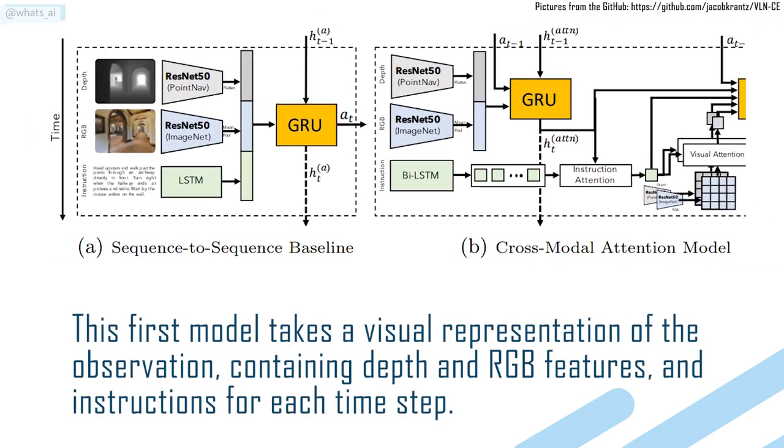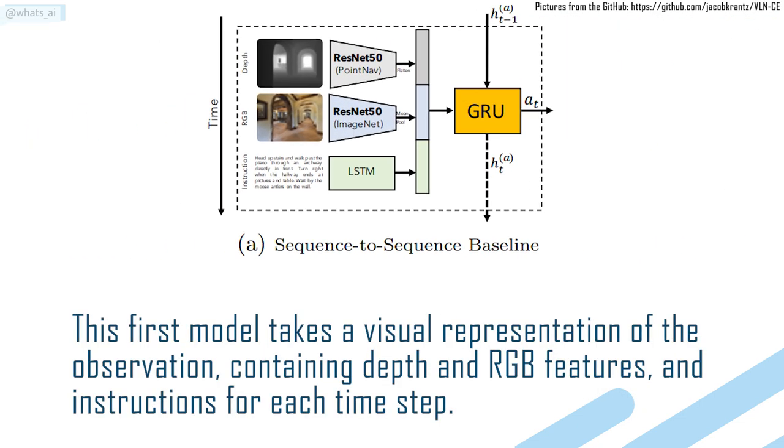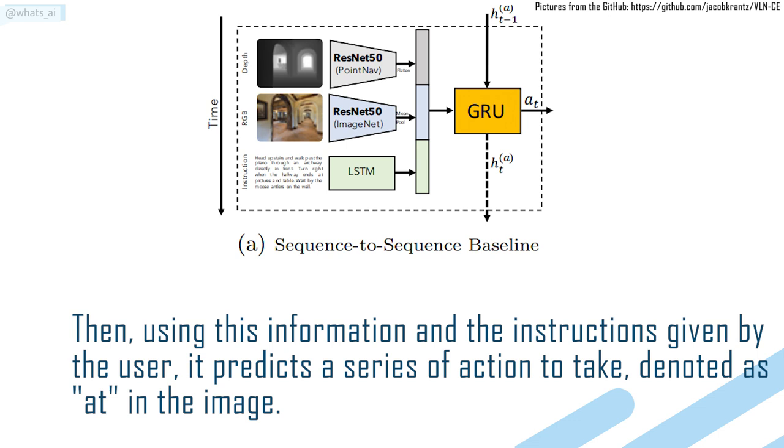The first model takes a visual representation of the observation, containing depth and RGB features, and instructions for each time step. Then, using this information and the instructions given by the user, it predicts a series of actions to take, denoted as A-T in this image.